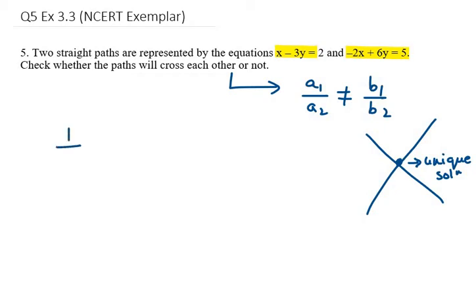So a1 is given as 1, a2 is given as minus 2, b1 is given as minus 3, b2 is given as 6. And if it is equal, then it can't be intersecting lines.